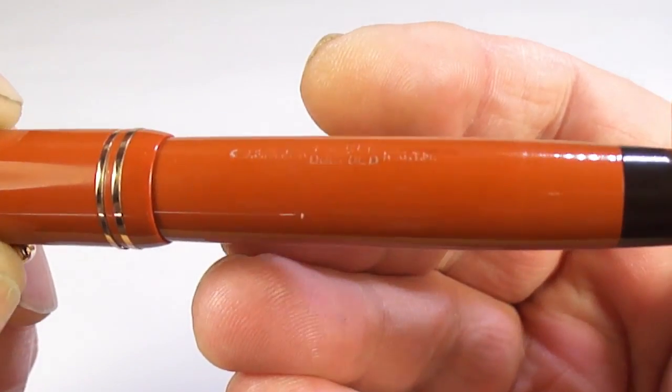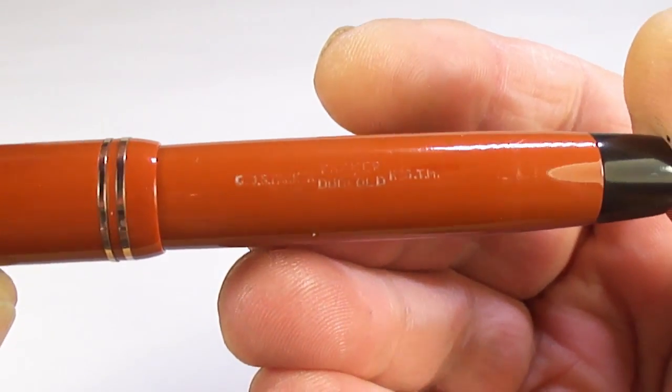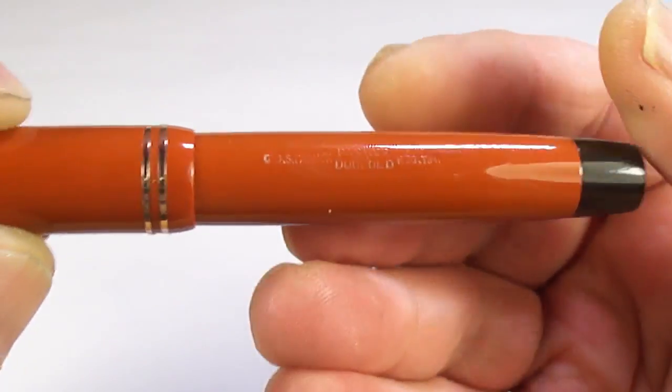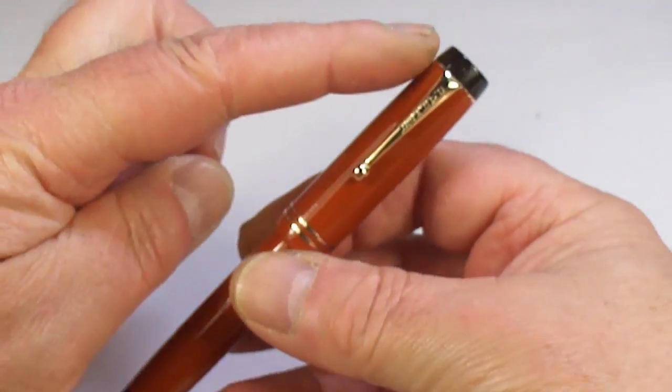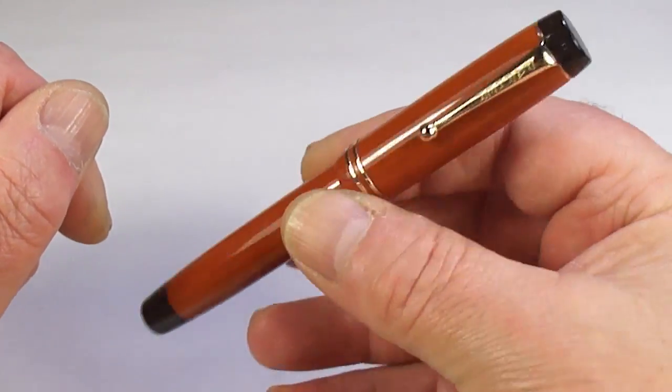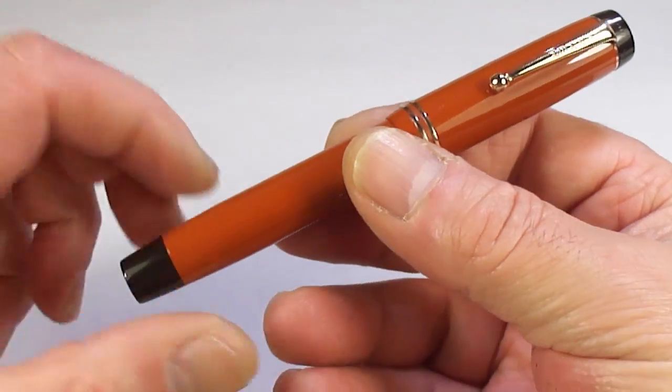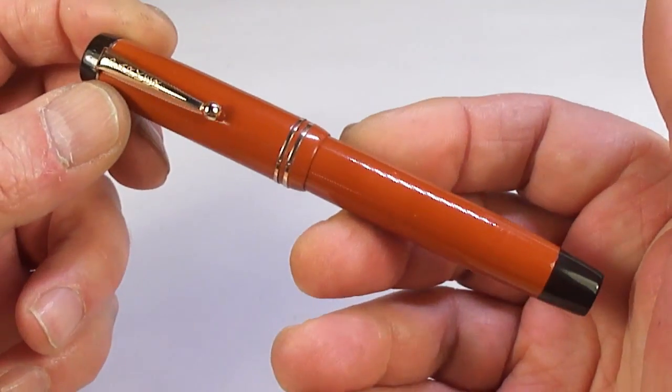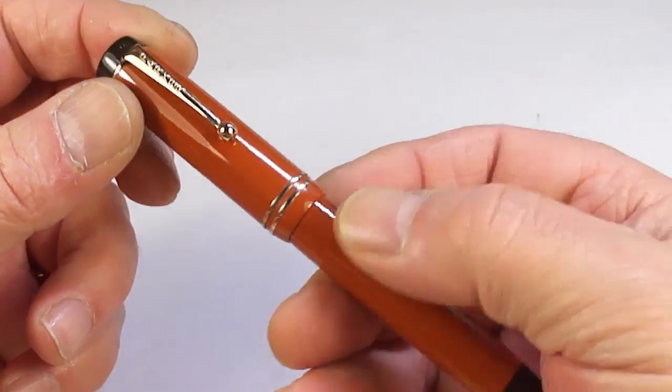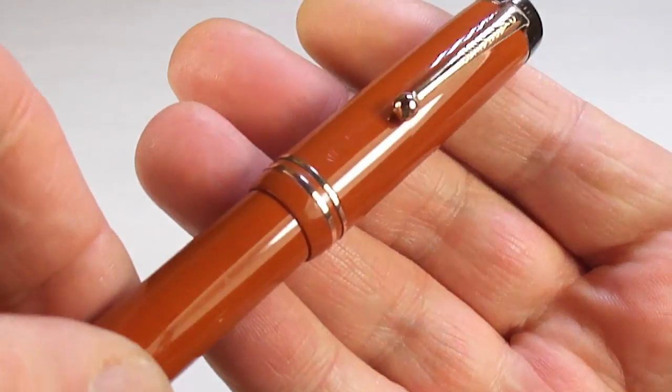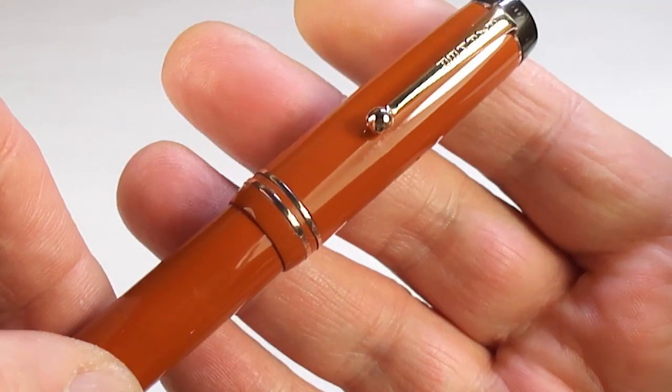It says GOS in the middle, Parker Duofold, and then at the bottom of the barrel there's a nice imprint. You can see the size of the pen from the top of the cap to the bottom of the barrel, around about 126 millimeters capped. Around the barrel it's a lovely chunky 13 millimeters in diameter.